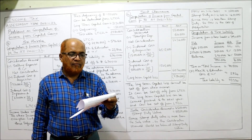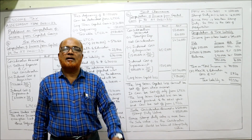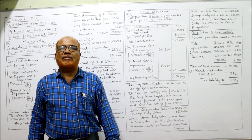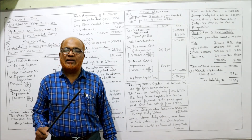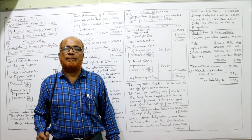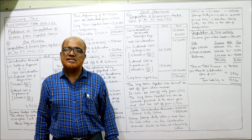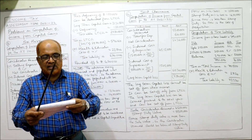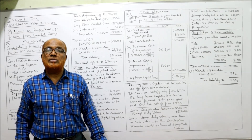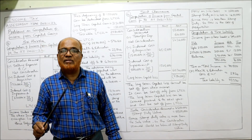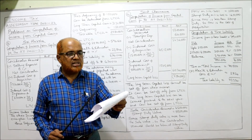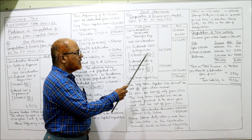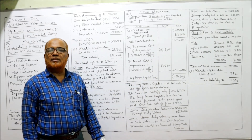FMV on 1-4-2001 is Rs. 15 lakh whereas stamp duty value is Rs. 16 lakh. The Income Tax Act says the FMV value should not exceed the stamp duty value — whichever is less we have to take. Since FMV of Rs. 15 lakh is less than the stamp duty value of Rs. 16 lakh, we take Rs. 15 lakh as the cost of acquisition. Indexed cost of acquisition: Rs. 15 lakh × 301/100 = Rs. 45,15,000.